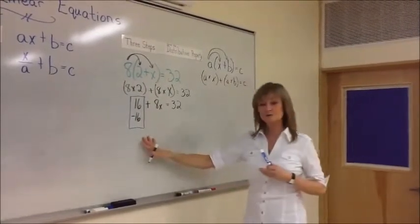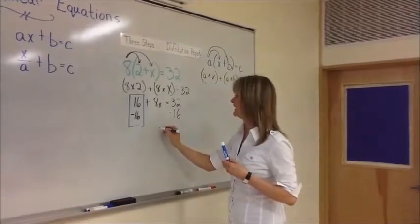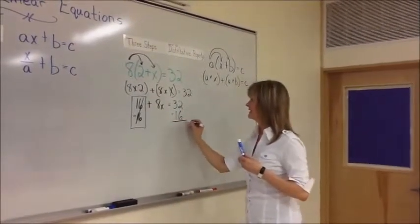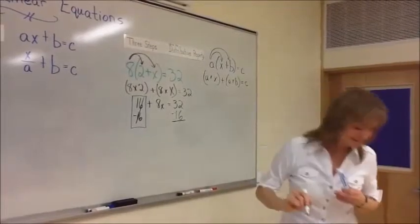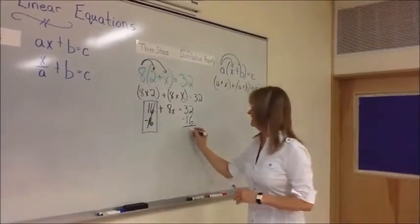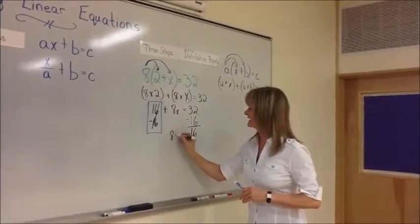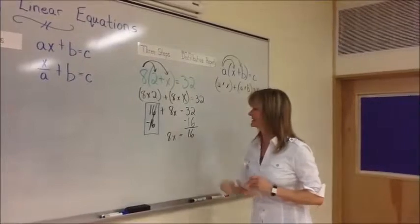And what you do to one side, again, you have to do to this side. So you now have this being zeroed out, this being equaling... I'm going to double check, 16. And now you're left with 8X equaling 16.